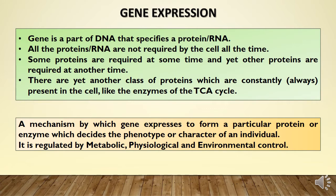It's not that the proteins and RNAs our cell needs are required all the time. Some proteins are required at some time, and other proteins are required at another time. But yes, there are exceptions like enzymes of the TCA cycle which are constantly present in the serum. This mechanism of gene expression decides which protein or enzyme is made, ultimately deciding the phenotype or character of an individual, and it is further regulated by metabolic, physiological, and environmental control.